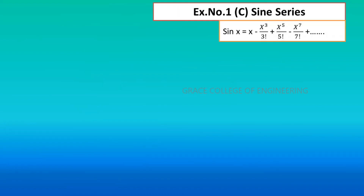The third exercise is the sin series. The sin series formula is: sin(x) = x − x³/3! + x⁵/5! − x⁷/7! and so on.